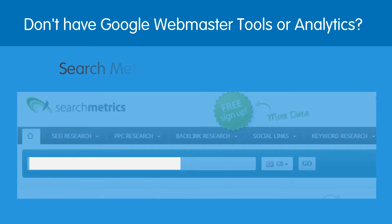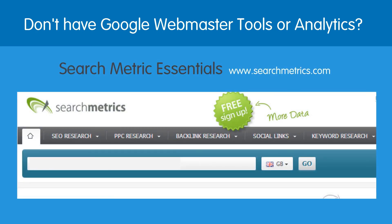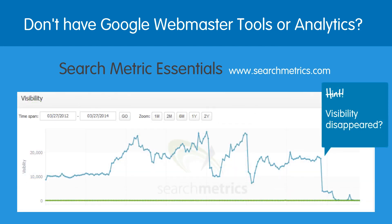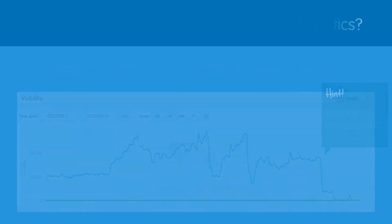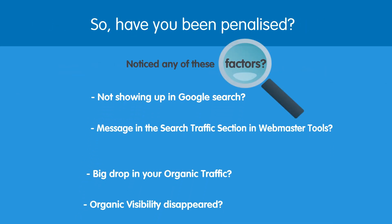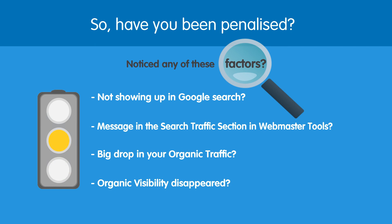The second tool is Search Metrics Essentials. Again, there is a free version that you can use to check your site. Enter your URL and country and see if your organic visibility has disappeared. If it has, you've probably been penalised. So, if you notice one or more of the above factors, then you can be sure that Google has penalised your site and you need to do something about it quickly.